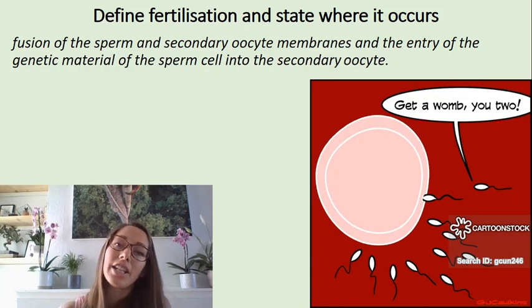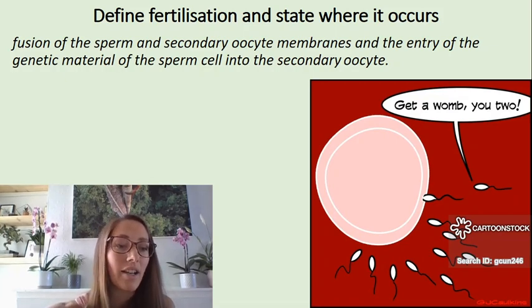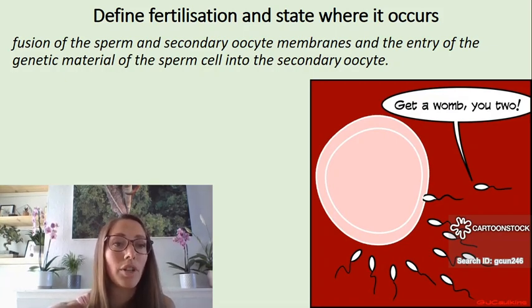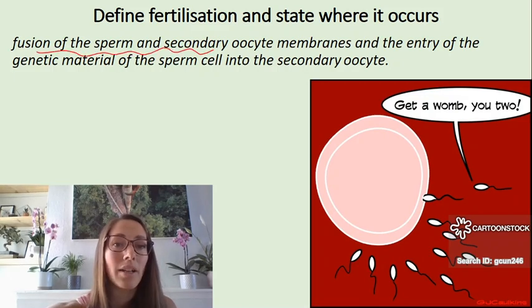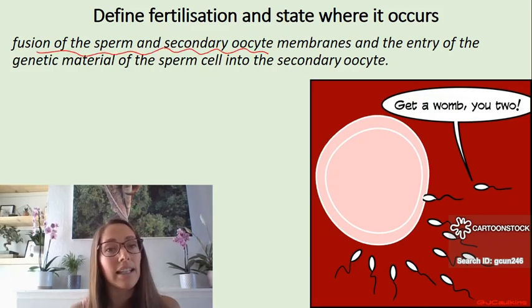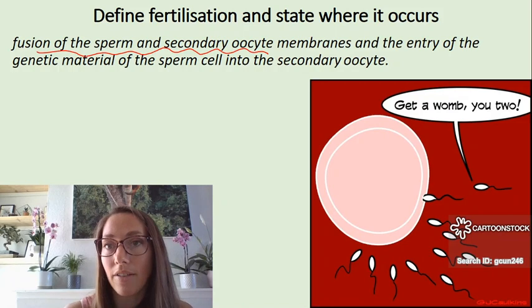So fertilization — what is it and where does it occur? It's basically the fusion of the spermatozoa and the secondary oocyte, and this occurs in the fallopian tubes.